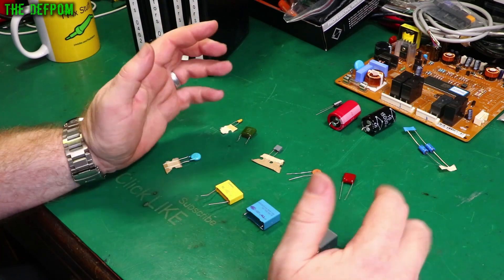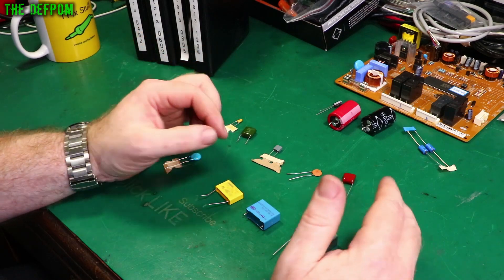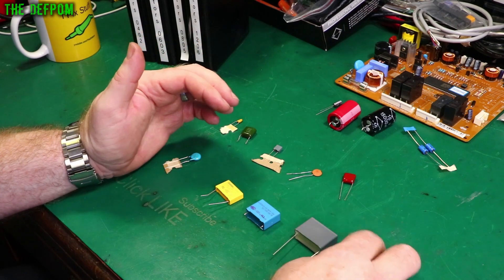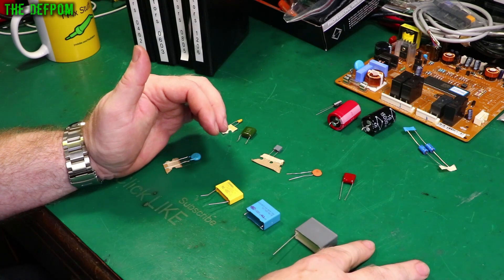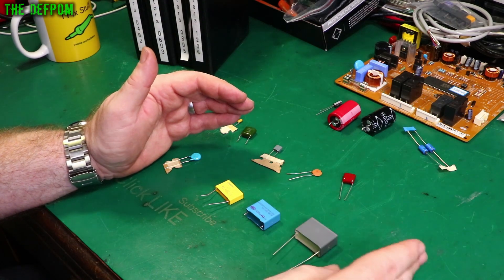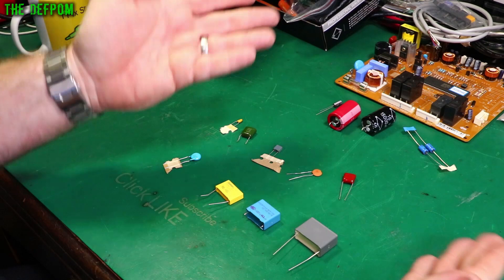Now these are X class. X class caps are designed to fail short. These are across the line. So if you go between your two inputs for your AC circuit, you've got your phase and your neutral or your hot and your whatever you might be. But there are two AC lines coming in, not the earth, but the other two lines.